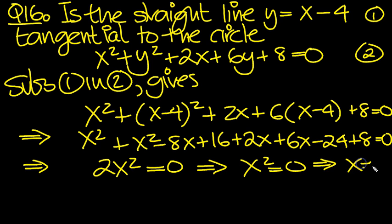And when we square root both sides, we just get one solution: x equals 0. So when x is 0, you get y equals minus 4.